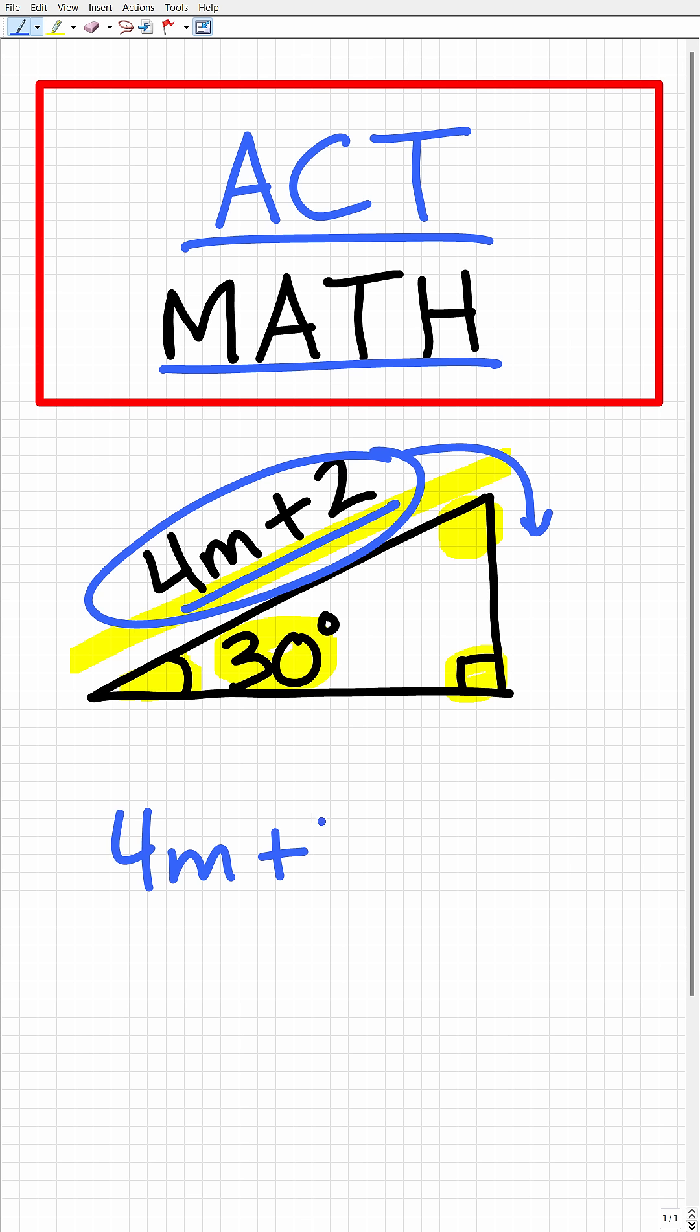All right, so 4m plus 2 divided by 2 is the same thing as 2 times 2m plus 1, right? So we're just going to factor out a 2, all this divided by 2. And you can see our 2s cross cancel. So this shorter side right here is 2m plus 1.